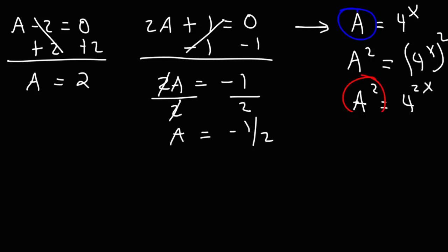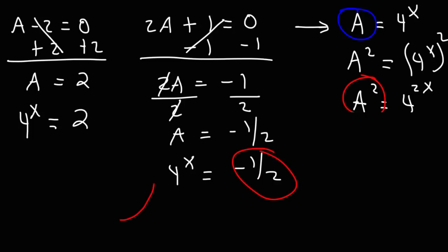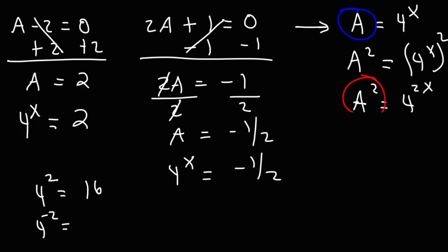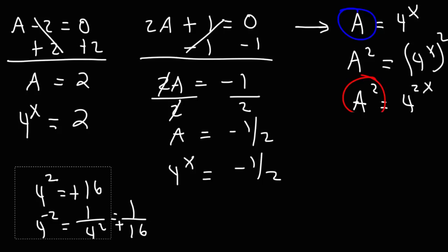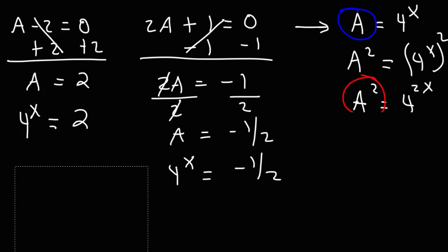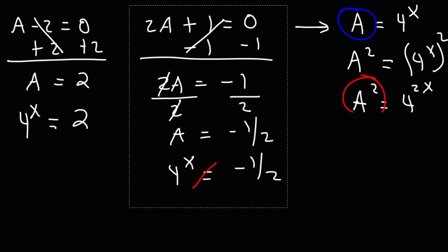Keep in mind that when we created this substitution, we set a equal to 4 raised to the x. So if a equals 2, that means 4 raised to the x equals 2. And if a equals negative 1 half, then 4 to the x would have to equal that. However, an exponential equation won't give you a negative result — 4 to the x always gives a positive answer regardless of what x is. For instance, if x is positive 2, 4 squared is 16; if x is negative 2, 4 to the negative 2 is 1 over 16. Both are positive. So 4 to the x cannot equal negative 1 half, and we will not have two answers for this problem.